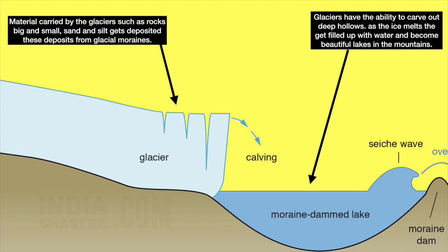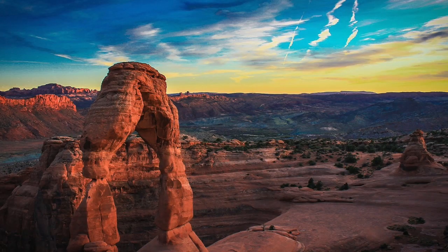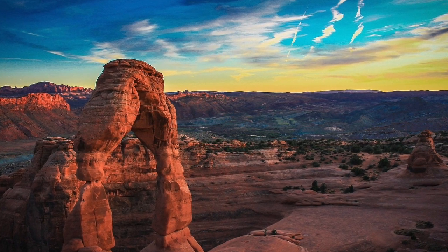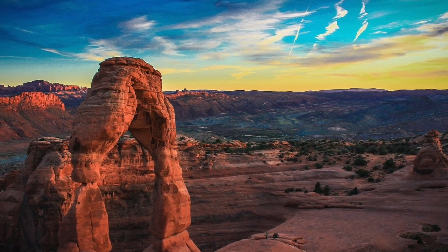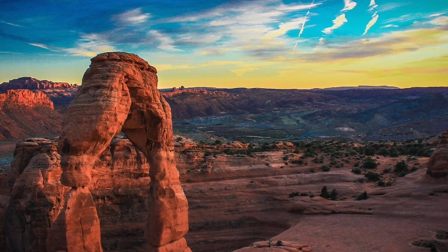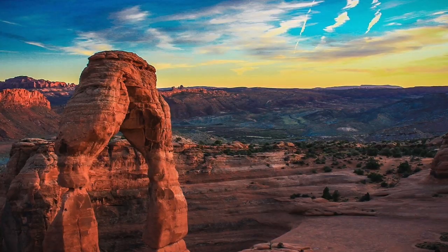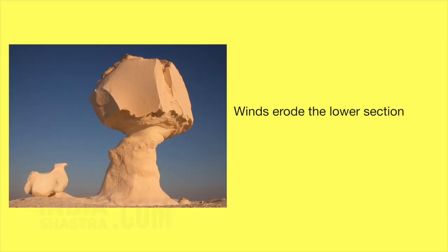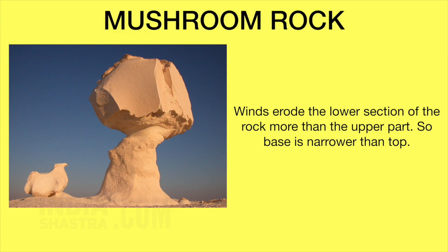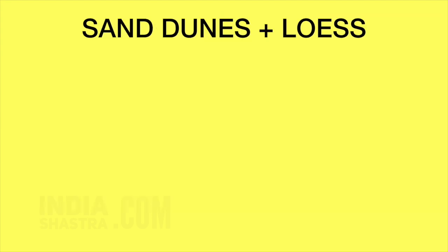Now let us talk about the work of wind. An active agent of erosion and deposition in the deserts is wind. We will discuss three landscapes created by winds in the deserts. The first is mushroom rocks. When winds erode the lower section of a rock more than the upper part, the base becomes narrower than the top — this is the case of mushroom rocks.